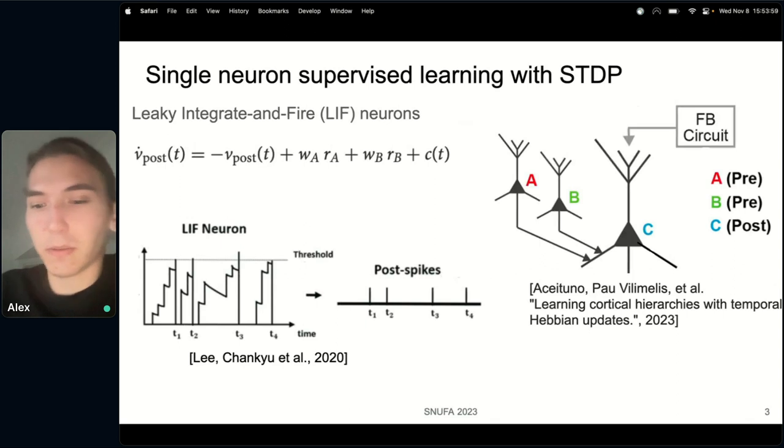So first I'm going to start explaining our method from just a single neuron and then after that I'll go to whole networks. And then I'll explain how from one neuron we can connect them and learn on the scale of the full neural network with multiple layers.